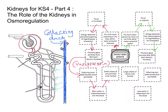As a result, the collecting duct is not so permeable to water. So less water can escape out of the collecting duct back into the blood circulation — less water is reabsorbed back into the blood. So we lose a lot of water down the collecting duct, and we produce a large volume of dilute urine.